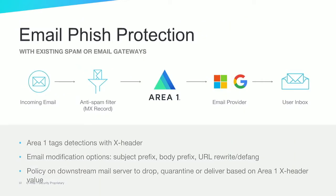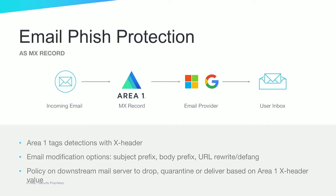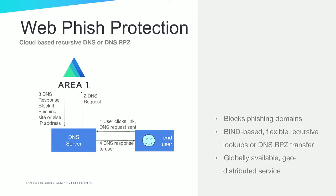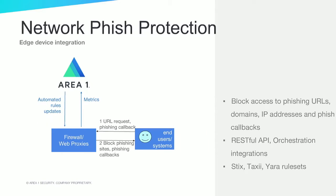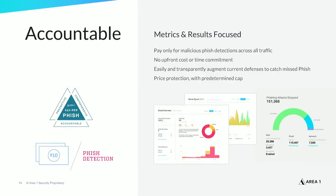The service is easy to deploy and integrates with existing email, web, and network security infrastructure. For email phishing protection, when added behind a legacy secure email gateway, the service detects phishing email and tags detections with an X-header; the downstream mail server then takes policy action — whether to drop, quarantine, or deliver the email — based on the X-header value. The service can also be deployed in front of cloud email services such as Office 365 and Google G Suite to protect from targeted phishing attacks. To protect from malicious downloads and fileless attacks such as credential harvesting, the service includes a cloud-based DNS that integrates with your DNS server to block access to phishing URLs and domains, and it easily integrates with edge security devices to automatically update rule sets on firewalls and web proxies with early visibility to phishing sites.